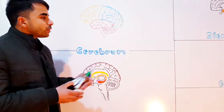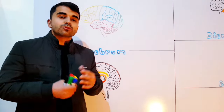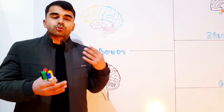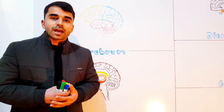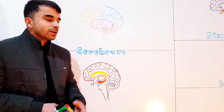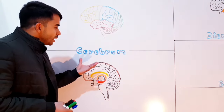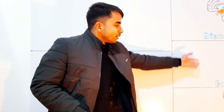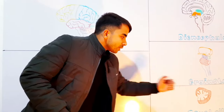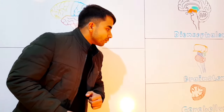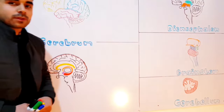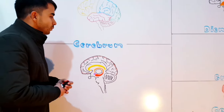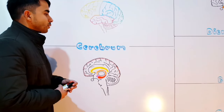According to one classification, the brain is divided into four major regions: the cerebrum, the diencephalon, the brain stem, and also the cerebellum — which we are going to talk about each of them right now. So let's start from the cerebrum.